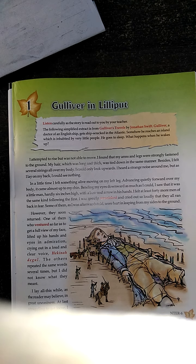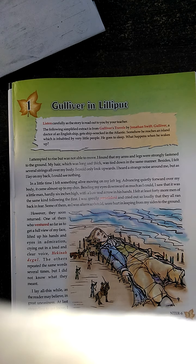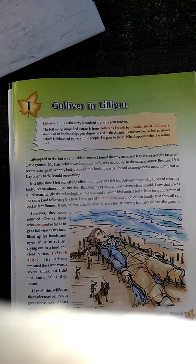I attempted to raise but was not able to move. I found that my arms and legs were strongly fast to the ground. My hair, which was long and thick, was tied down in the same manner. Besides, I felt several strings all over my body. I could only look upwards. I heard a strange noise around me, but as I lay on my back I could see nothing.